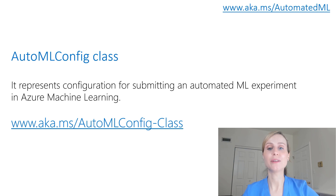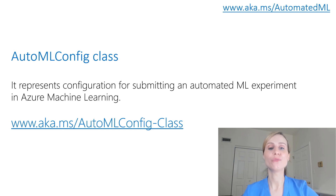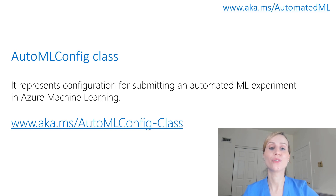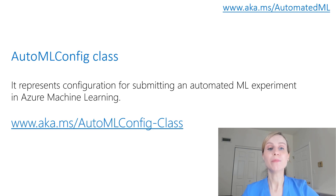The AutoML Config class represents a configuration for submitting an automated machine learning experiment in Azure Machine Learning. This configuration object contains and persists the parameters for configuring the experiment run, as well as the training data that needs to be used at run time. To learn more, please see aka.ms/AutoMLConfigClass.